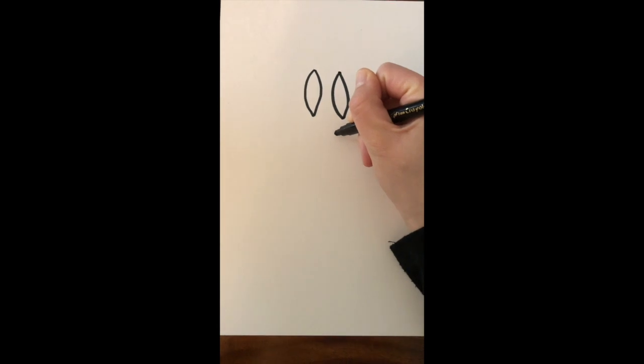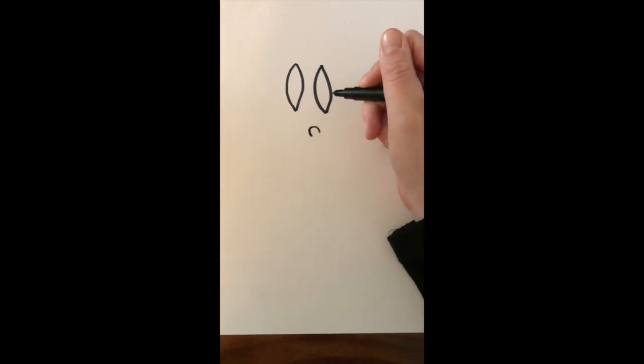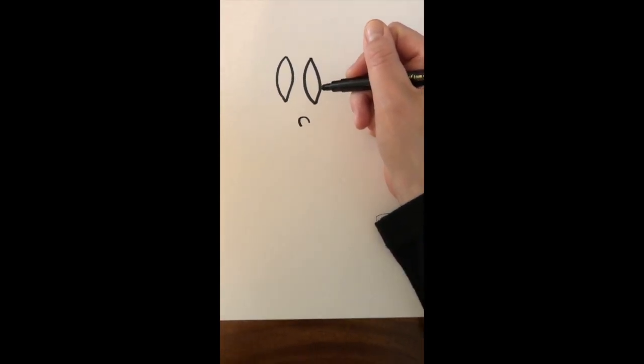I'm going to make an upside-down U. That's going to be the eye of the bunny, and it's going to be like a closed eye.